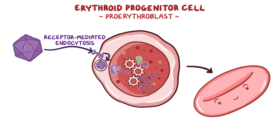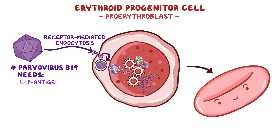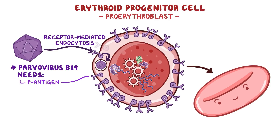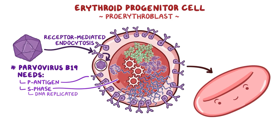Why not simply replicate in cells of the respiratory system? Well, parvovirus B19 needs two things. It prefers to bind to a specific receptor, the P antigen, which is found in large numbers on proerythroblast cell membranes, and it needs cells that pass through the S phase of the cell cycle, which is the phase where cell DNA is replicated. Since the body is constantly producing new red blood cells, there are always proerythroblasts going through the S phase at any given time.